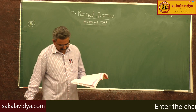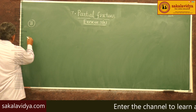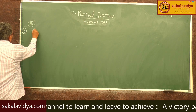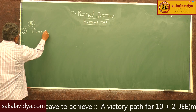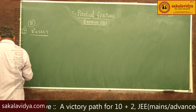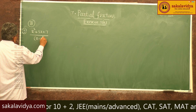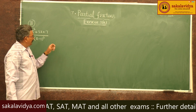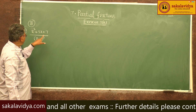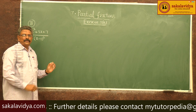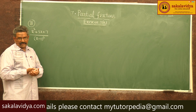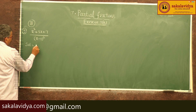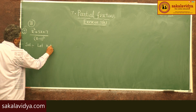Fifth problem: resolve x squared plus 5x plus 7, divided by (x minus 3) cubed, into partial fractions. We know the easy method — let x minus 3 equal to y.